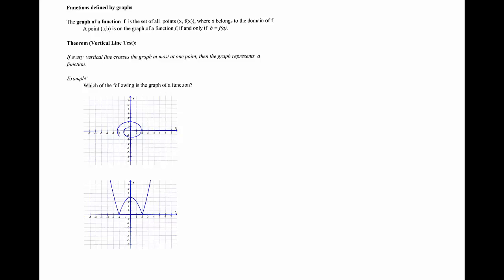The test is called the vertical line test and it says that if every vertical line crosses the graph at most at one point, then this graph represents a function. So let's look at two examples.